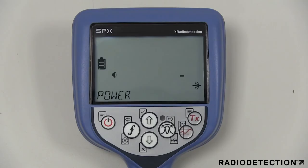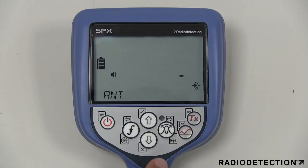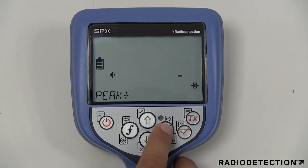The power menu option allows you to select the correct local power network frequency, 50 Hz or 60 Hz. The ANT menu allows you to enable or disable antenna modes.